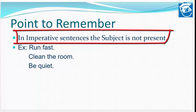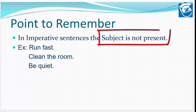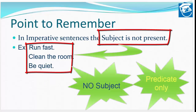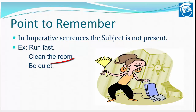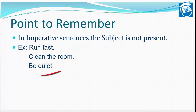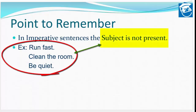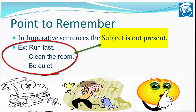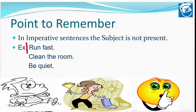Let's see one point to remember: in imperative sentences, subject is not present. Jo bhi hamare imperative sentences hote hain — jisme aadesh hota hai, request hoti hai, ya koi vinti hoti hai — aise sentences mein subject hota hi nahi hai. Kewal predicate wala part milega. For example: 'Run fast' — teez dodo, 'Clean the room' — apna room saaf karo, 'Be quiet' — chup raho. In teeno sentences mein koi bhi subject nahi mil raha hai.